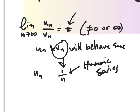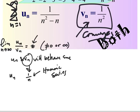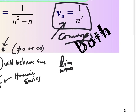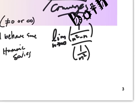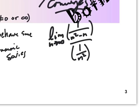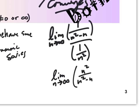Let's test it. I know 1 over n squared is a known convergent series, so I'm going to take the limit as n goes to infinity of u sub n — which is 1 over (n squared minus n) — divided by v sub n which is 1 over n squared. Dividing by a fraction means multiplying by its reciprocal, so that gives me n squared over (n squared minus n). Taking the limit using the highest power, we divide the leading coefficients, and that limit comes out to be 1.